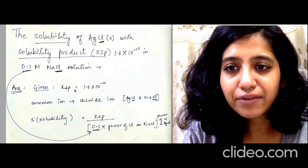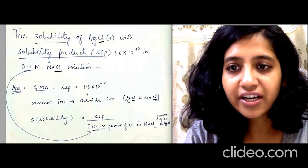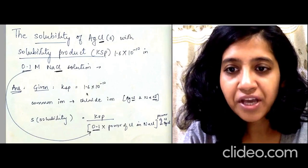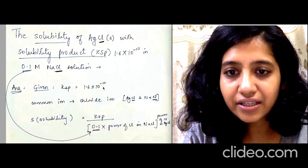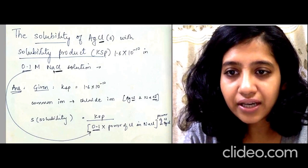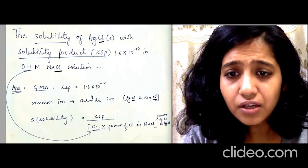This is a simple formula which my university faculty told me, their own derived formula. I used it a lot and it was very helpful. Ksp is given here. The common ion is chloride because NaCl has been added to AgCl, so chloride ion is the common ion.